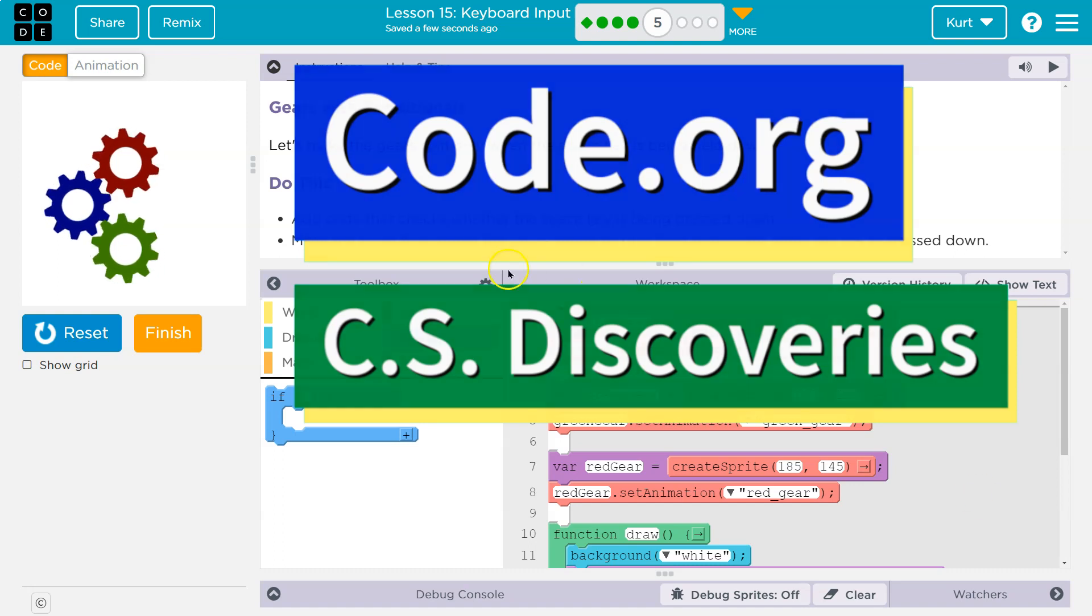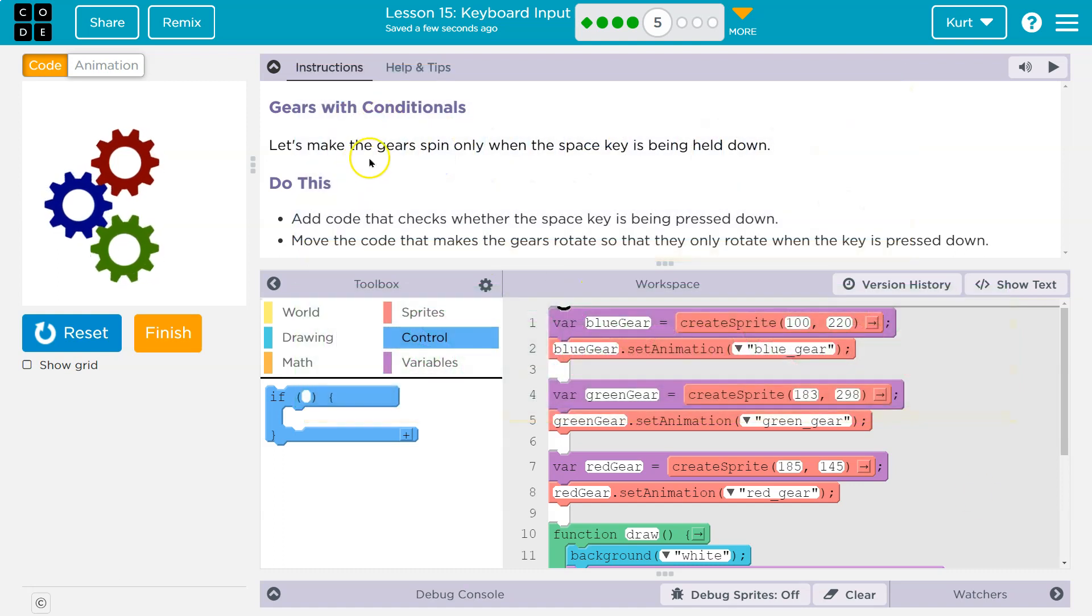This is code.org. Let's see what we're doing. Gears with conditions. Let's make the gears spin only when the space key is being held down. Okay, so you can see I already hit run on mine. They're spinning.